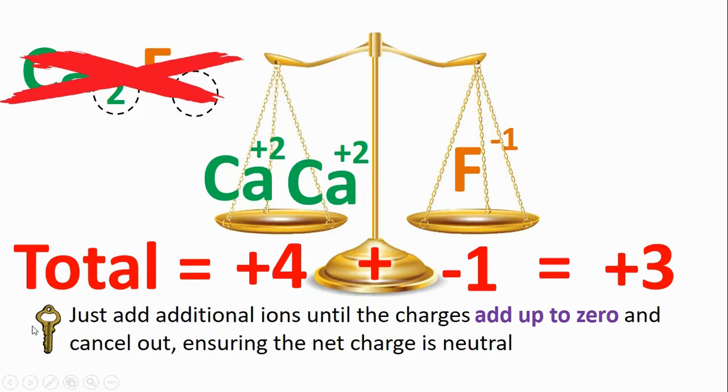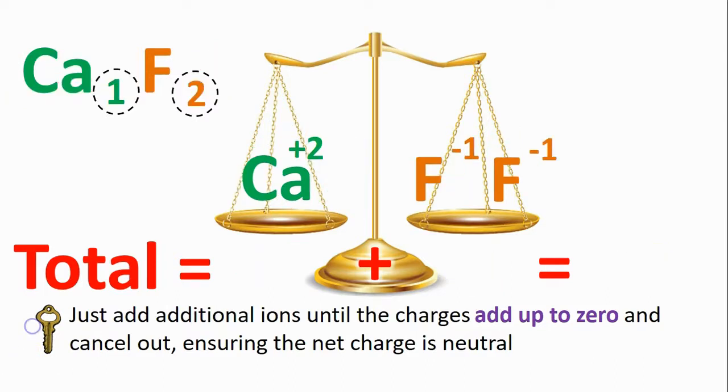So let's try one more scenario. What if we went back to one calcium but instead added two fluorides? Now my total positive is back to +2. But because I have two ions that are each -1, they add up to -2. Clearly those two sides balance. They're both the same number. That's what we're going for. If you like the idea of total charge, they both add up to zero. That makes Ca1F2 the correct formula.